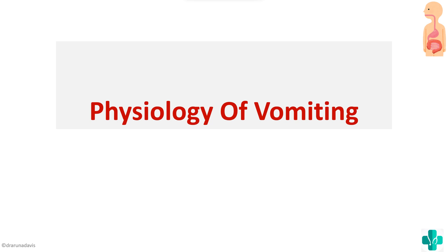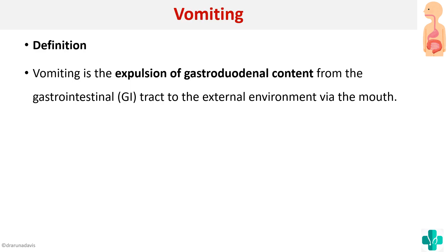In this video we're going to see about the physiology of vomiting, which can be asked as a short essay for first year MBBS students. The definition of vomiting is the expulsion of gastroduodenal contents from the gastrointestinal tract to the external environment via the mouth. There are several stimuli for vomiting, such as motion sickness or pregnancy, and we will now see the pathophysiology.